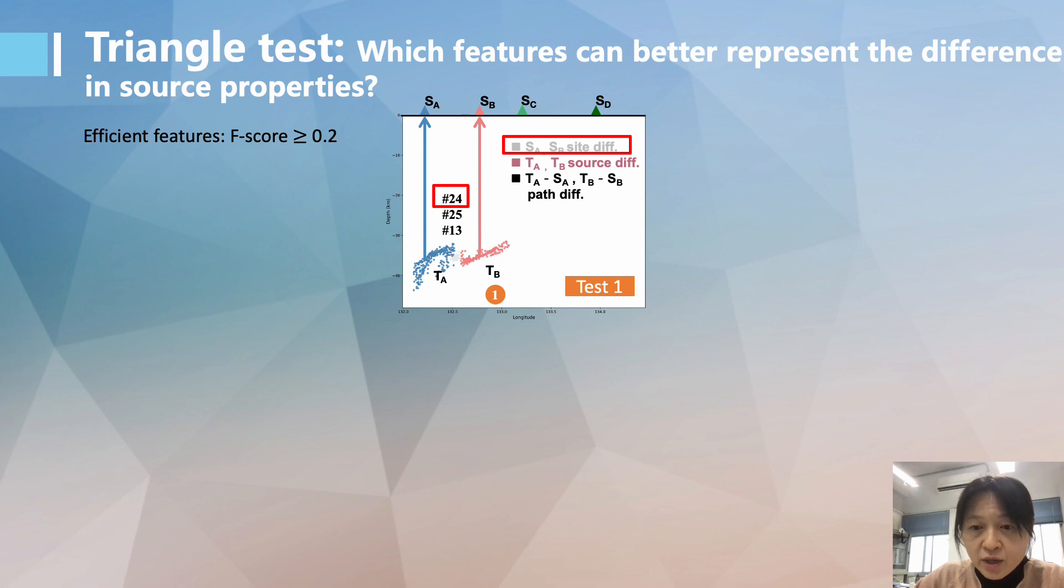We designed a triangle test aiming at determining which features can better represent the difference in source properties of tremor.